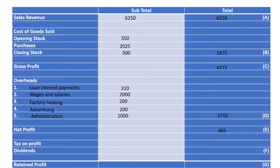With that profit there are only three things we can do with it: we can pay tax on it, we can give some to the shareholders, or we can keep it for future investment. So tax on profit — in this case it is £500. You pay tax on the previous year's figures, that's why this seems particularly high. Dividends are the money given to shareholders; they own the business so they get a share of the profit each year — dividends, or distributed profit — and in this case it is £50. We add those two together, step 6, to give us £550.